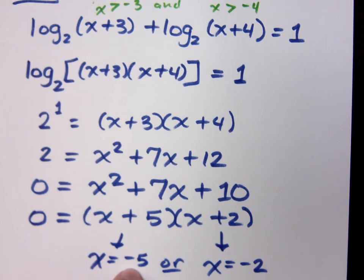Now, is negative 5 greater than negative 3? No. So what are we going to call this? Extraneous. This is going to be extraneous. It just doesn't work out. Does negative 2 work out? It should.